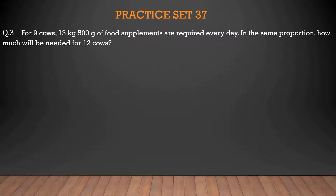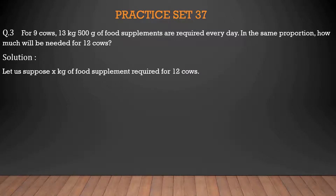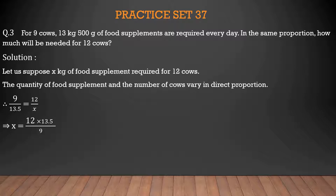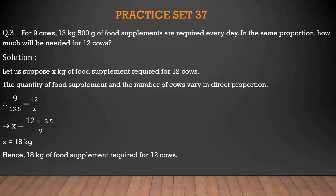Third question: For 9 cows, 13 kg 500 grams of food supplements are required every day. In the same proportion, how much will be needed for 12 cows? Let X kg of food supplement be required for 12 cows. The quantity of food supplement and the number of cows vary in direct proportion. So 9/13.5 = 12/X. Therefore X = 12 × 13.5 ÷ 9 = 18 kg. Hence, 18 kg of food supplement is required for 12 cows.